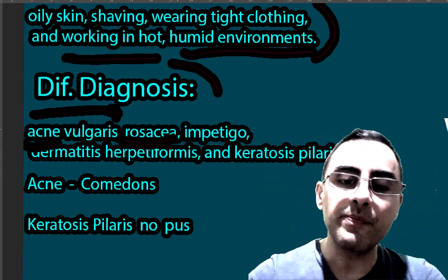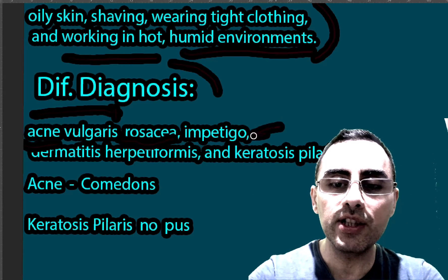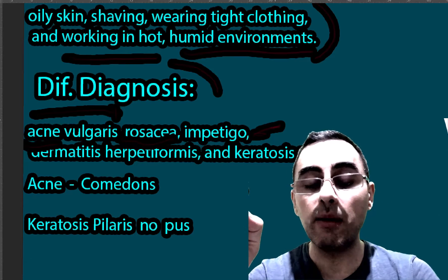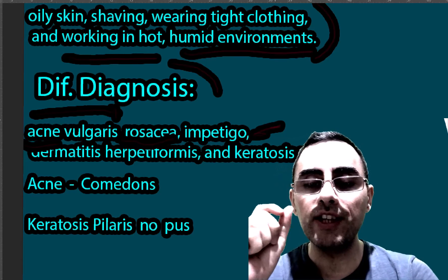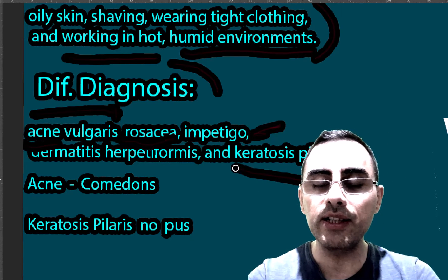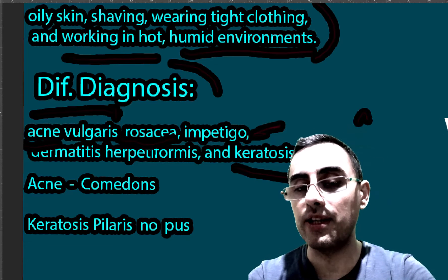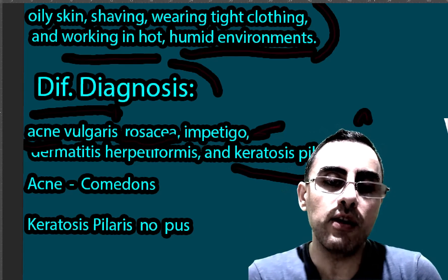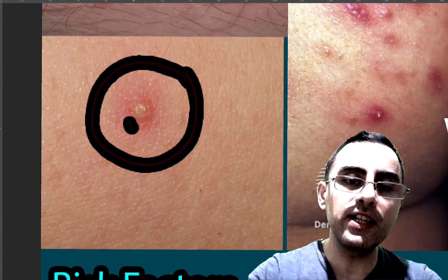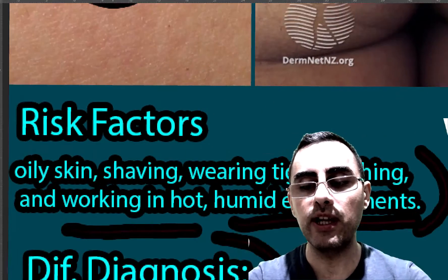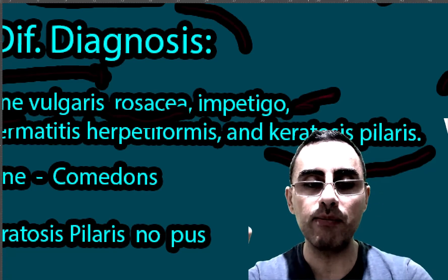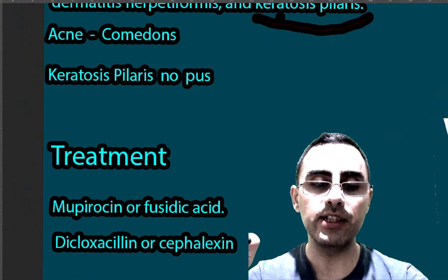Impetigo causes yellow crusts — it is also often caused by Staphylococcus aureus and produces thick yellow crusts on the face. Keratosis pilaris bumps are not filled with pus: in folliculitis the bumps are filled with pus, whereas in keratosis pilaris — which usually occurs on the arms and legs — the bumps are not filled with pus.